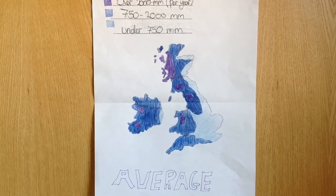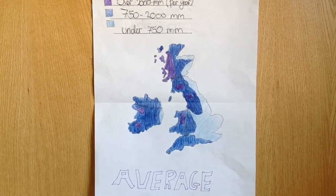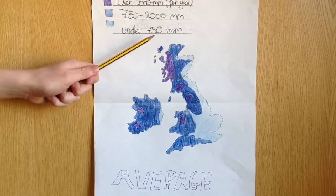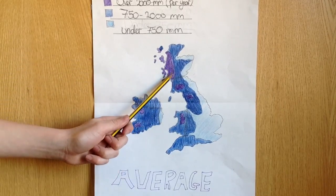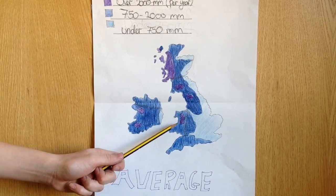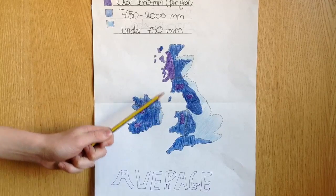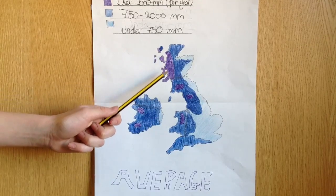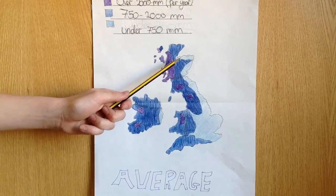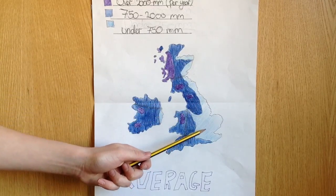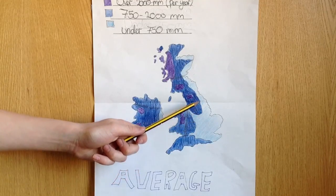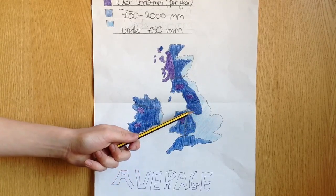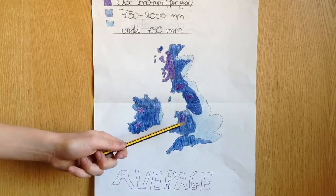This is a revision clip for the average rainfall in the UK. Where it is purple, it is in mountain ranges — in Scotland, the Pennines and in Wales. This is due to relief rainfall. On the eastern side there is less rain, which is due to this side being in the rain shadow of the mountains.